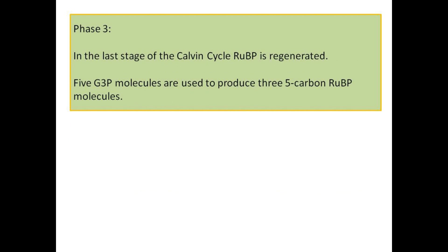Phase 3: In the last stage of the Calvin cycle, RuBP is regenerated. Five G3P molecules are used to produce three five-carbon RuBP molecules.